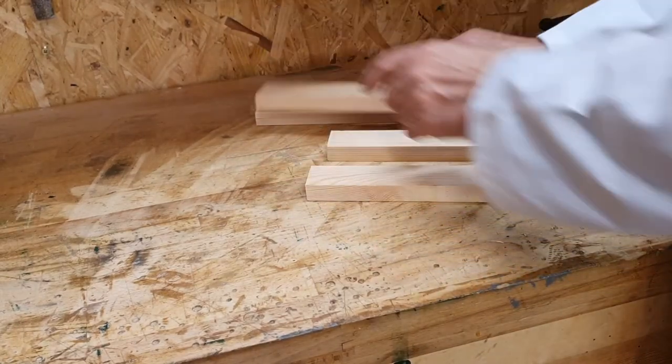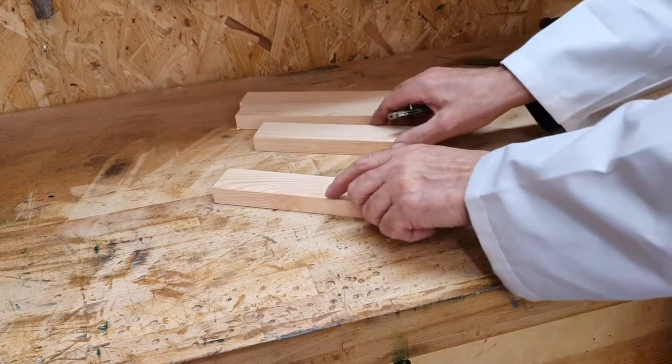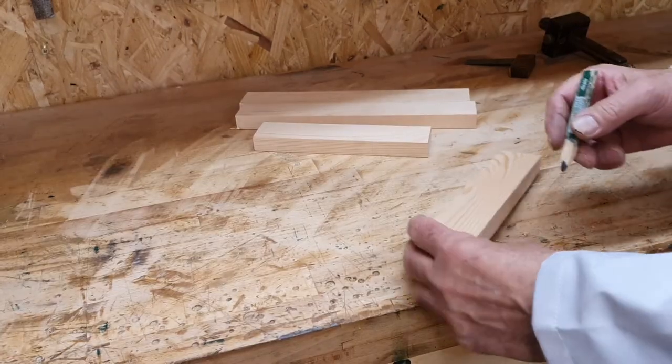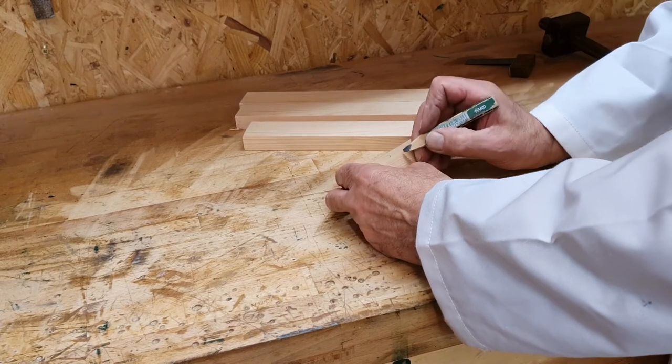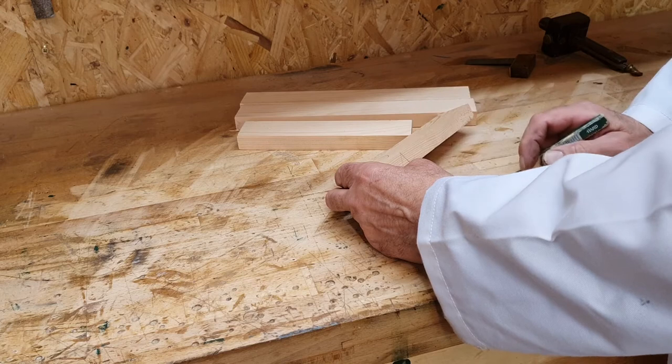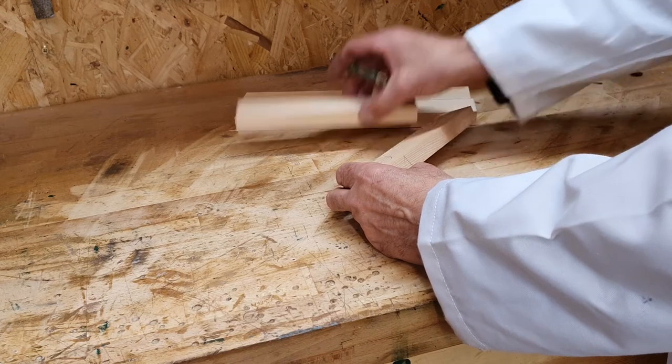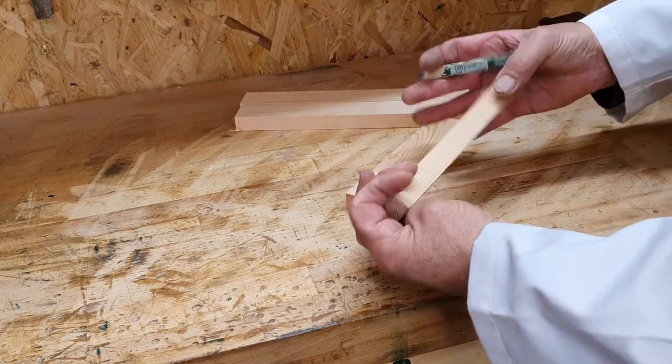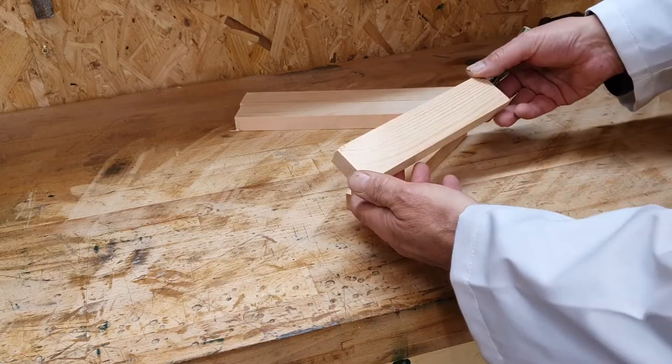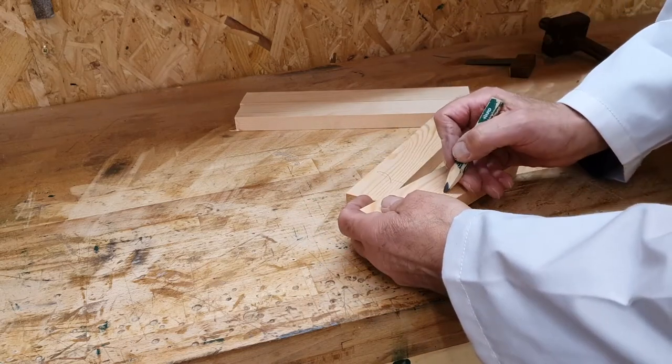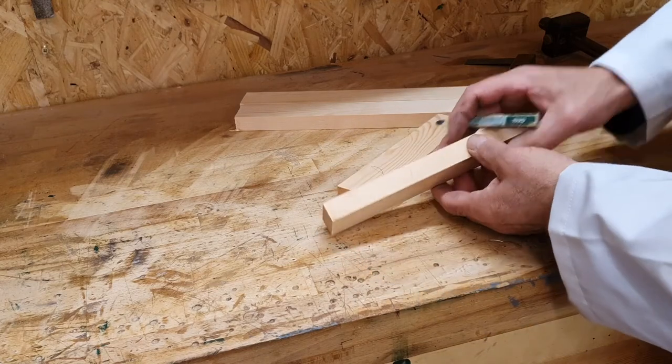With plane square edge softwood it is seldom that we need to plane the face side and face edge to produce the required surfaces. However we do need to select the face edge and a face side from which to work. You should choose the side and edge that have the least defects and allocate to them the appropriate marks. It will be from these two faces that you will do all your marking out from.